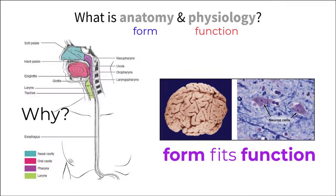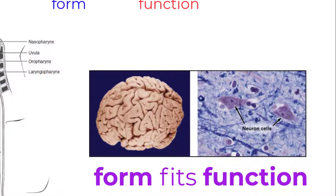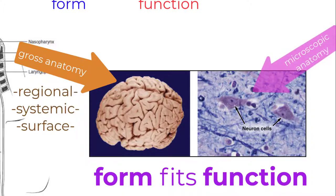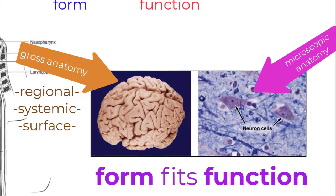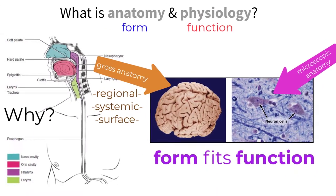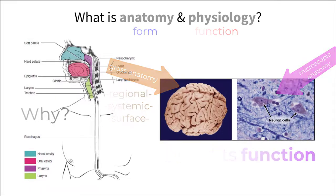When studying anatomy and physiology, we can also look at both form and function from different scales. The study of gross anatomy focuses on larger structures, like the brain as a whole, which can also be broken down into a few other regions, where microscopic anatomy focuses on the smaller structures, like the neurons within the brain. Both viewpoints help us understand form and function in essential ways.